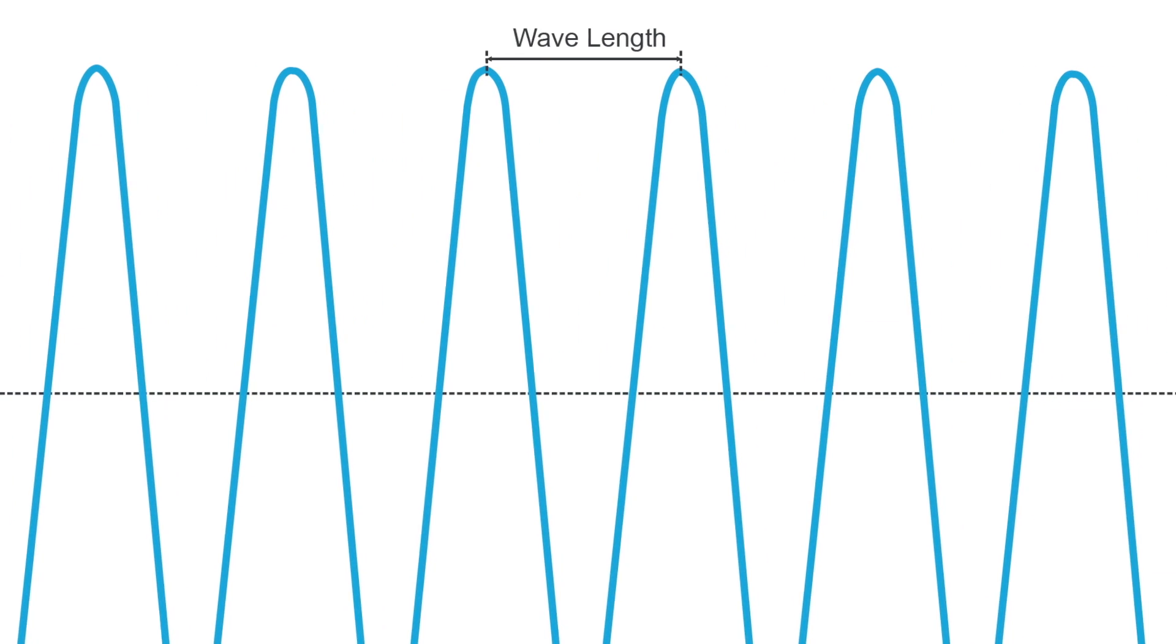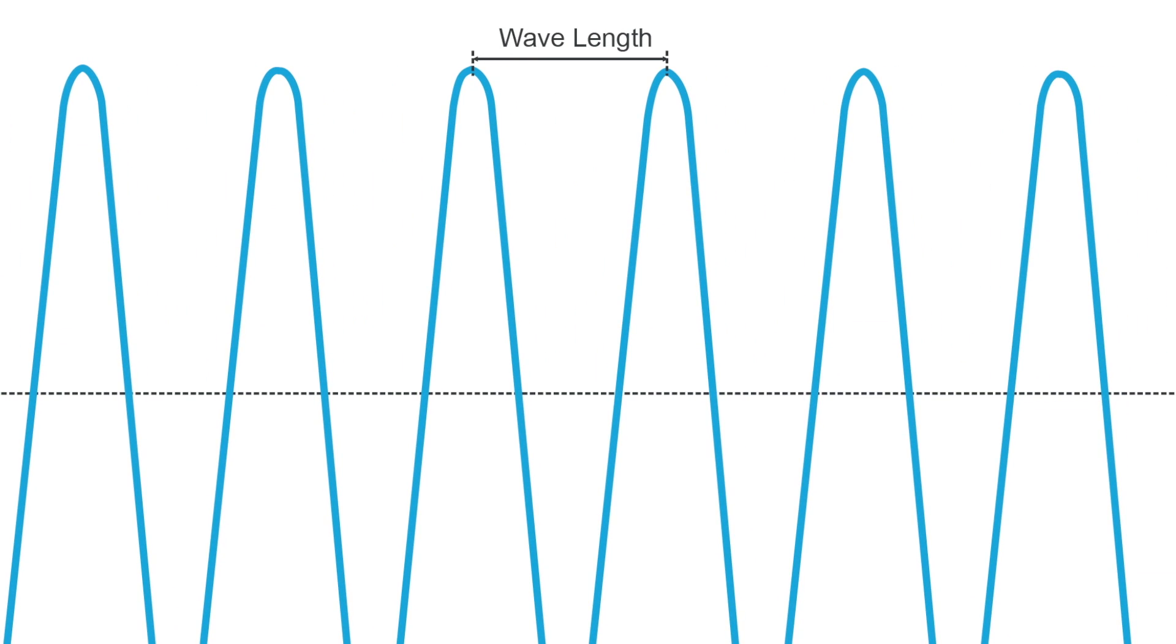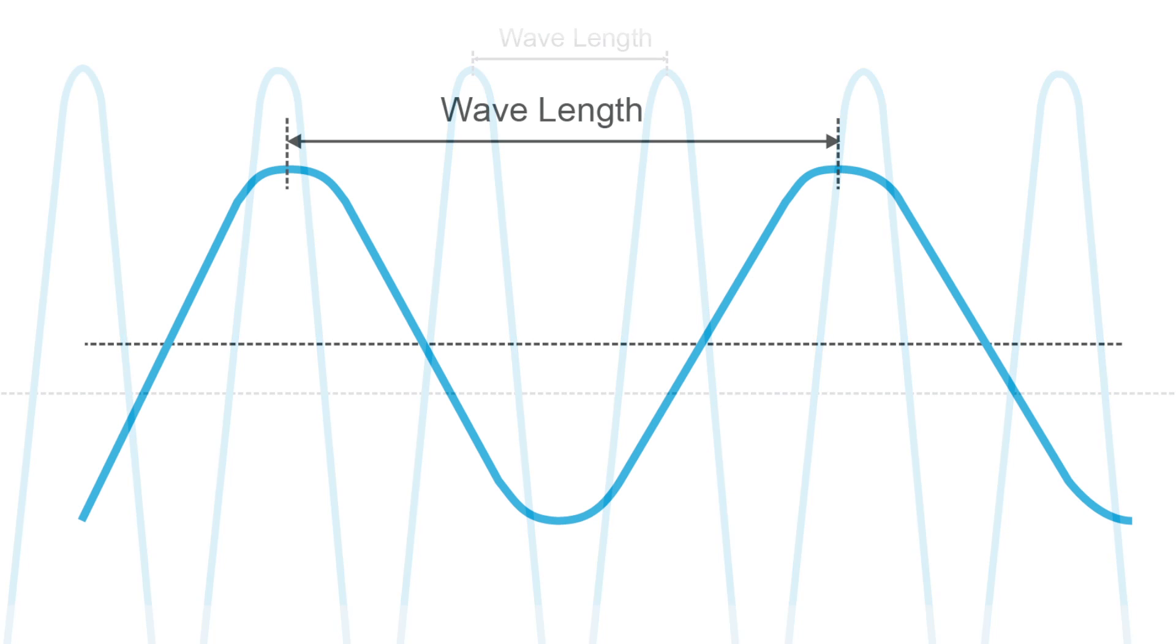Waves also have a length to them. That is the length between the same position on two waves. In radio, wavelengths can be very long. A single wave can be the size of a human being.